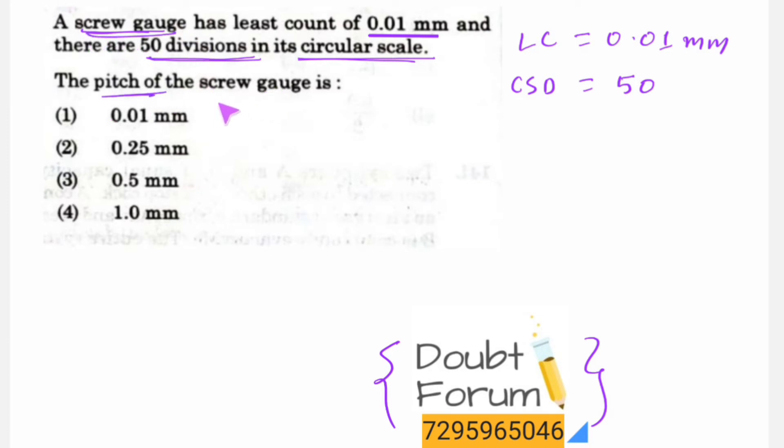The pitch in a screw gauge is the distance between two threads of the screw. The screw gauge has a screw with threads, and that distance is known as the pitch of the screw gauge.